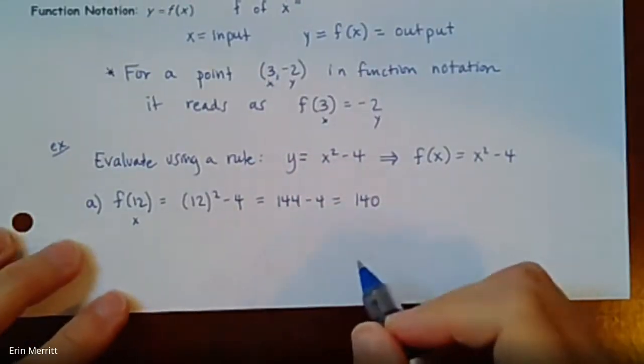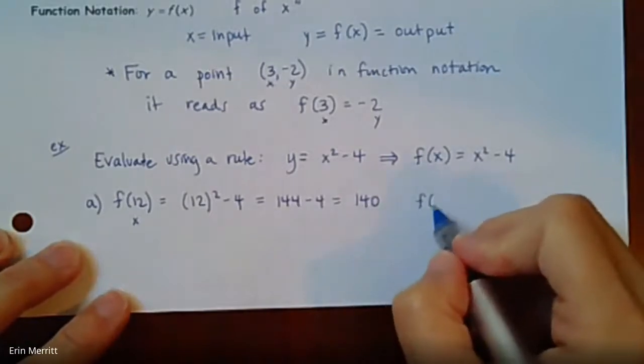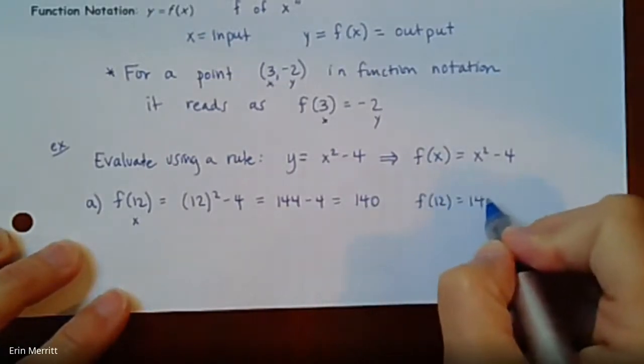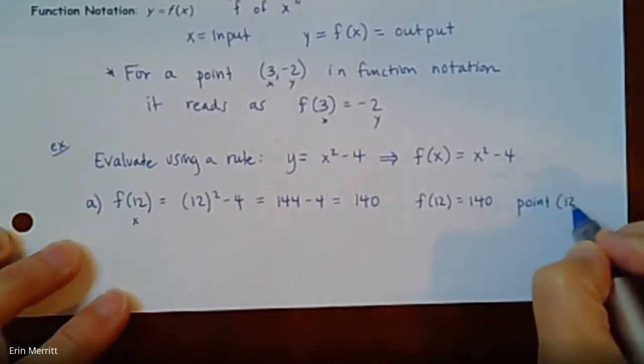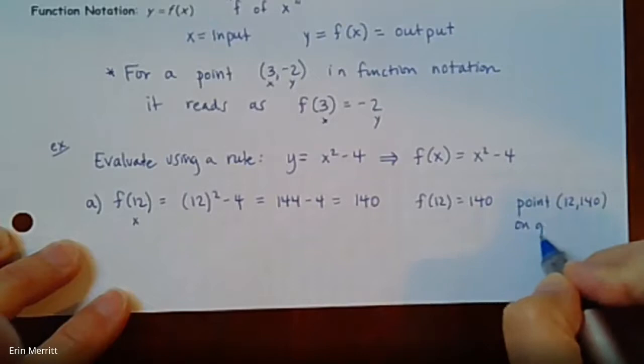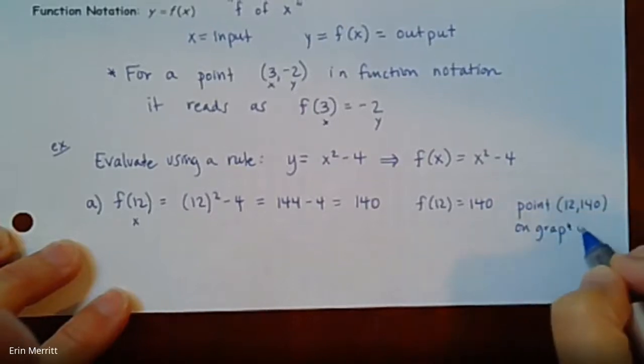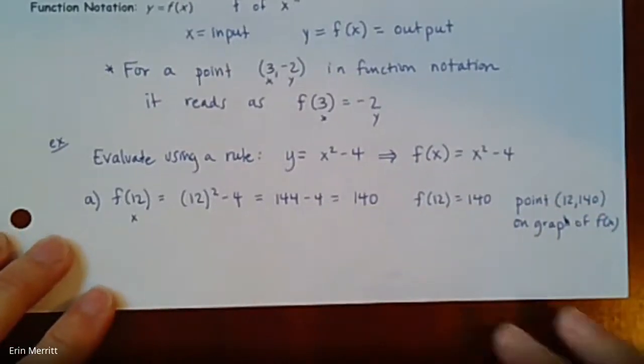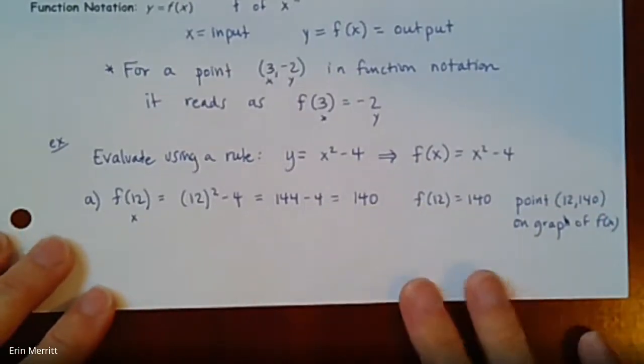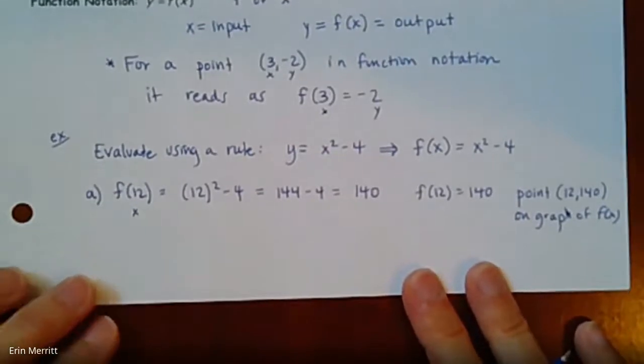So what that means is a couple things. It means that we can say F of 12 equals 140, but it really means that the point (12, 140) is on the graph of F of X. So if you were to graph this thing, that is a coordinate point on that graph.